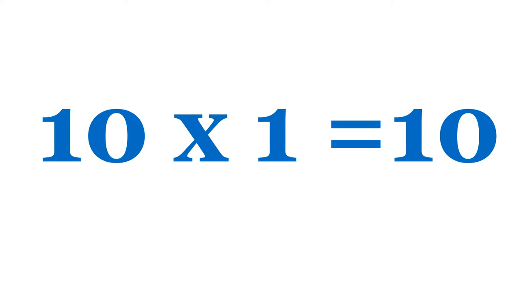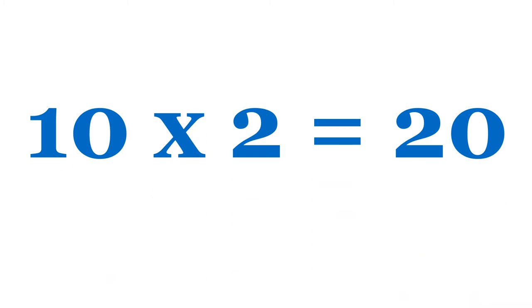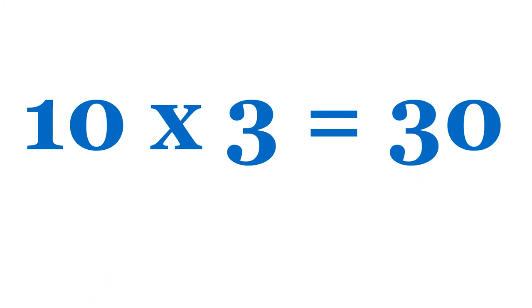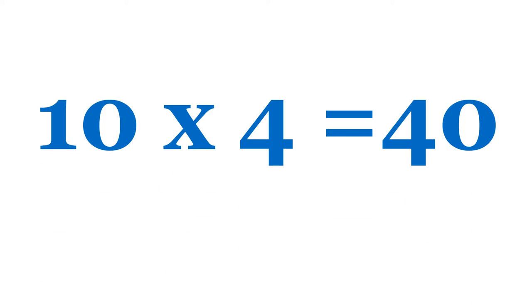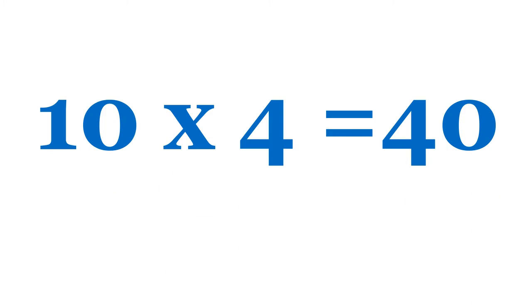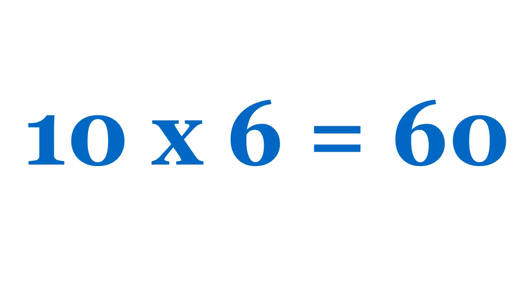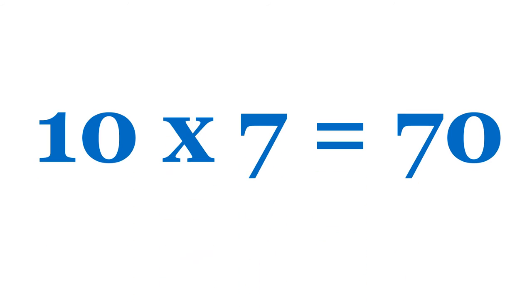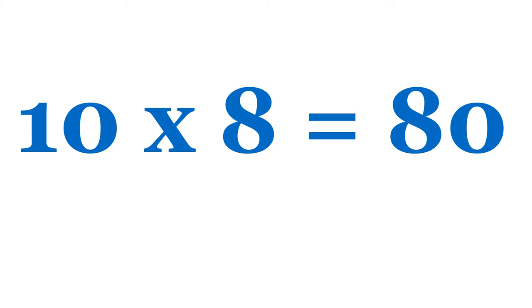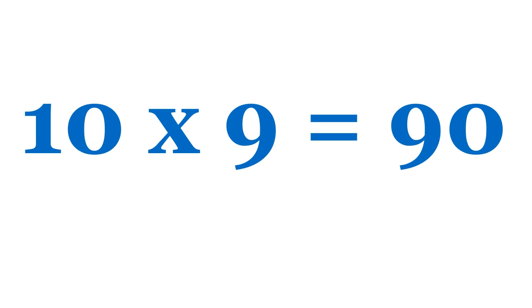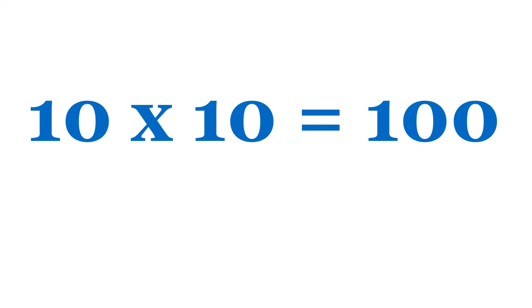Ten ones are ten. Ten twos are twenty. Ten threes are thirty. Ten fours are forty. Ten fives are fifty. Ten sixes are sixty. Ten sevens are seventy. Ten eights are eighty. Ten nines are ninety. Ten tens are hundred.